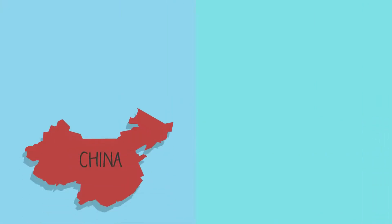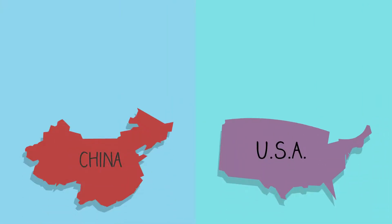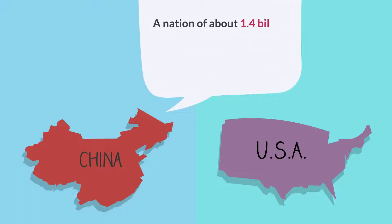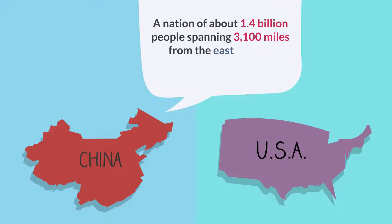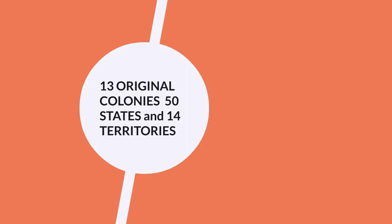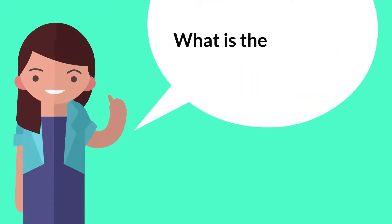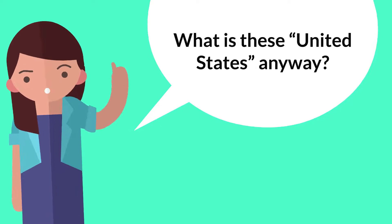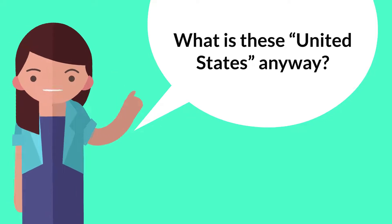By comparison, mainland China, the most comparable country to the U.S. in size, is a nation of about 1.4 billion people spanning 3,100 miles from the East to West containing 2.4 billion acres. Now that you know the basics, you may be wondering, what is these United States anyway?